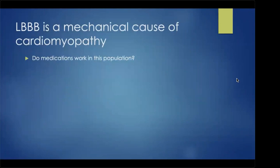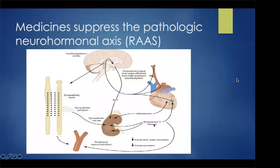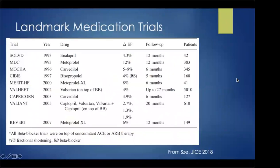If left bundle branch block is a mechanical cause of cardiomyopathy causing dyssynchrony, do medications work in this population? With severe mitral regurgitation, we don't give medications when EF declines because it's a mechanical problem. Medicines suppress the pathologic neurohormonal axis — the renin-angiotensin-aldosterone system. Spironolactone blocks aldosterone, ACE inhibitors and ARBs block angiotensin-2, and beta-blockers block renin. Yet not one of the landmark medication trials stratified outcomes by QRS morphology, so we don't know if these medicines even work in people with left bundle branch block.